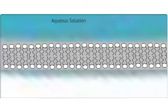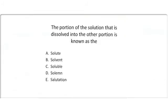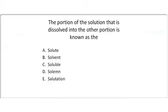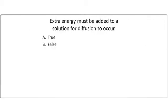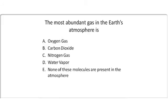Here are a few concept questions to see if you understood some of the main points of this video. These questions are answerable on the course website. Question 1: The portion of the solution that is dissolved into the other portions is known as the — solute, solvent, soluble, solemn, or salutation? Question 2: Extra energy must be added to a solution for diffusion to occur — true or false? Question 3: The most abundant gas in the Earth's atmosphere is — oxygen gas, carbon dioxide, nitrogen gas, water vapor, or none of these molecules are present in the atmosphere?